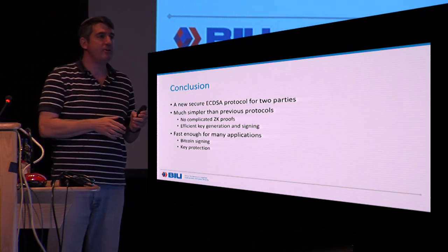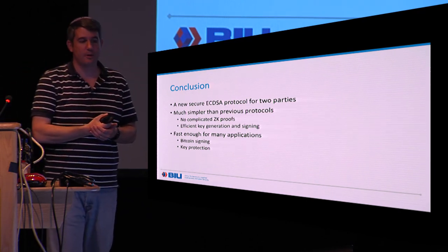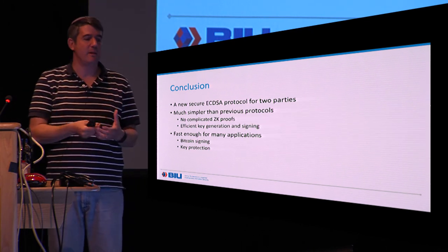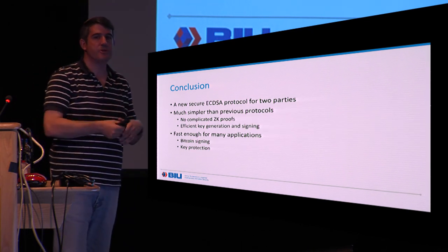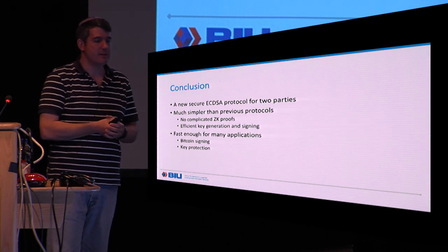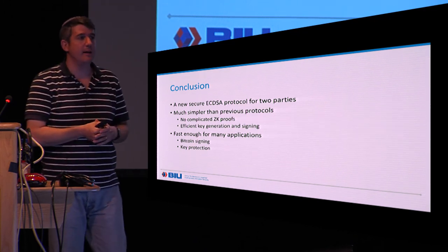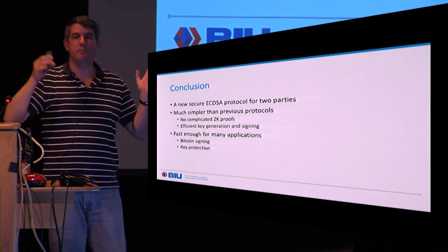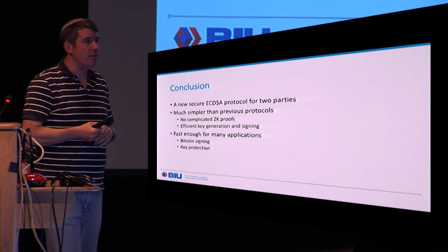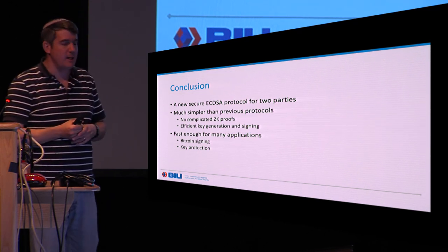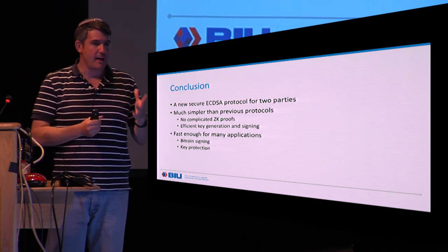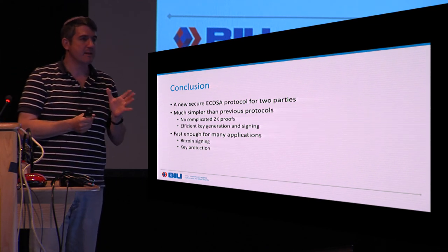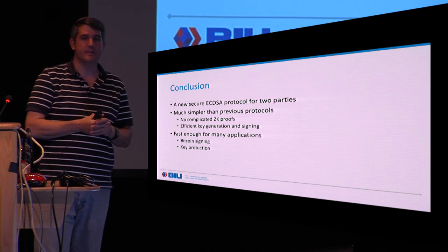In conclusion, we have a new two-party ECDSA protocol that is much simpler than previous protocols, with no complex zero-knowledge proofs or distributed RSA key generation. It has efficient key generation and signing, runs between a mobile device and a server very efficiently, and is fast enough for many applications such as Bitcoin signing and key protection in general. Thank you very much.